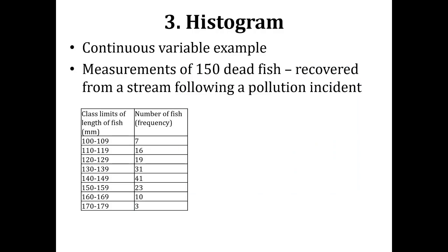Now we take the example of a continuous variable — the measurement of 150 dead fish, specifically their total length recovered from a stream following a pollution incident. We have a frequency table with class limits of fish length and the number of fish as their frequency. In the first class, observations fall from 100 to 109 millimeters with 7 fish; the next class is 110 to 119 millimeters with 16 fish, and so on.